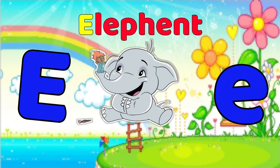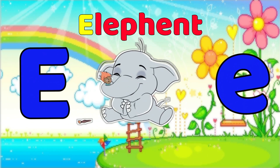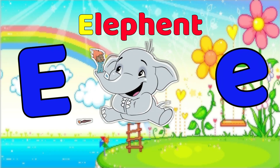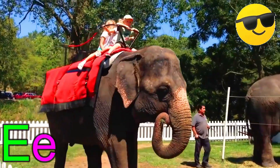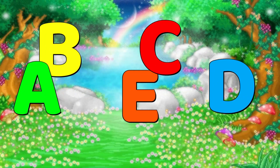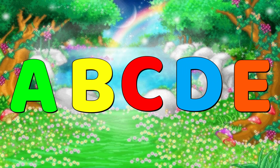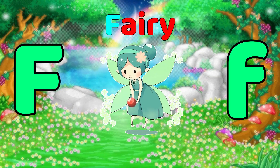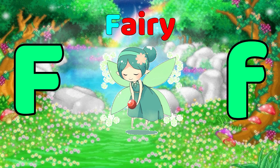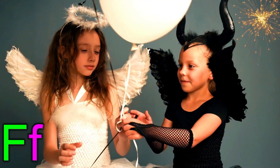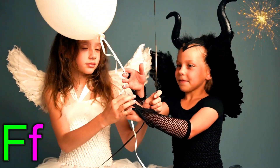E is for Elephant. E-e-elephant, E-e-elephant, E, Elephant. F is for Fairy. F-fairy, F-fairy, F-fairy, F, Fairy.